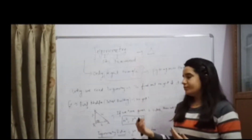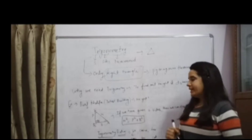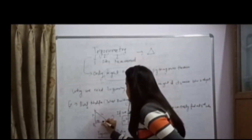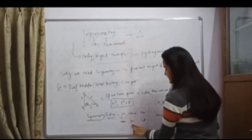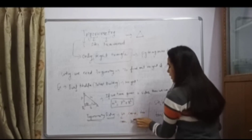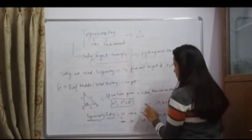Here we come with the introduction of trigonometry ratios. This is angle A, which is between the base and hypotenuse. If we have to find out the trigonometry ratio of sine A, it will be perpendicular upon hypotenuse. For cosine A, it will be base upon hypotenuse. And for tan A, it will be perpendicular upon base. Then we have cosec, sec, and cot — they are the reciprocals. Cosec is the reciprocal of sine, sec is the reciprocal of cosine, and cot is the reciprocal of tan. So cosec A equals 1 upon sine A, which becomes hypotenuse upon perpendicular.